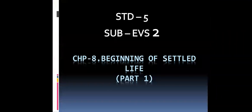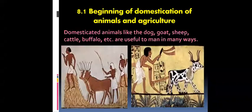Students, today we are starting with EVS 2 Chapter 8, Beginning of Settled Life, Part 1. The first point which we are going to learn today is the beginning of domestication of animals and agriculture.